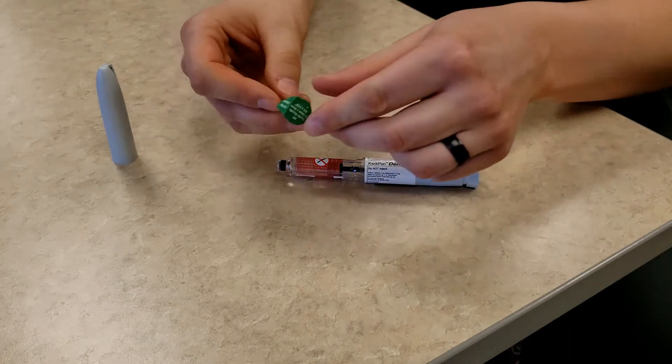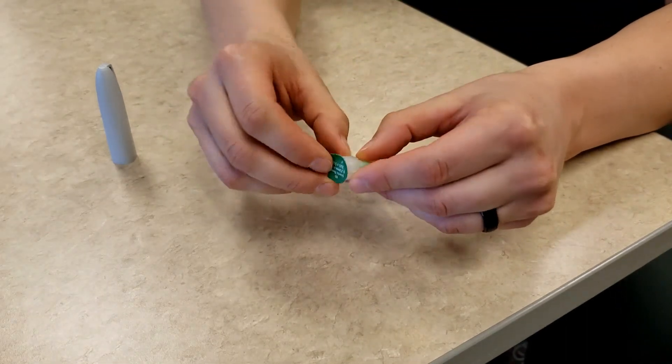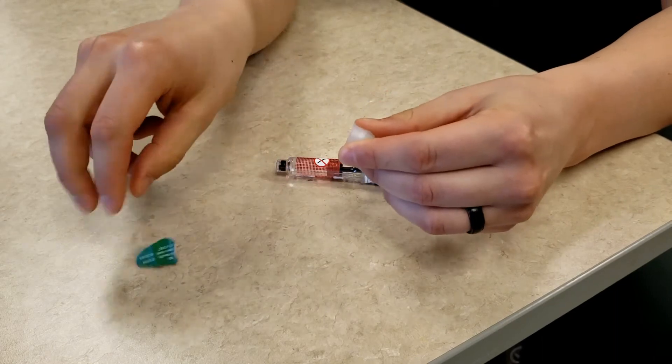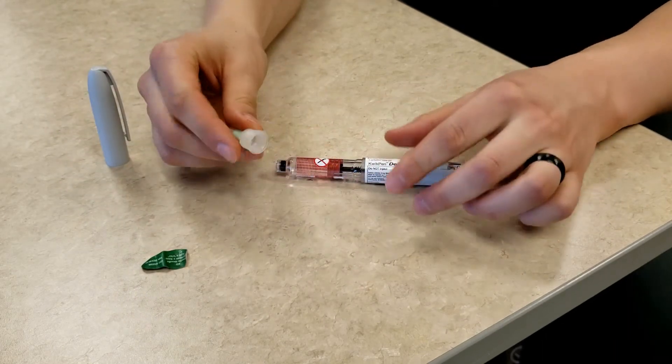Next, you will take your pen needle and remove the paper tab. Then, press the pen needle onto the insulin pen and screw it into place.